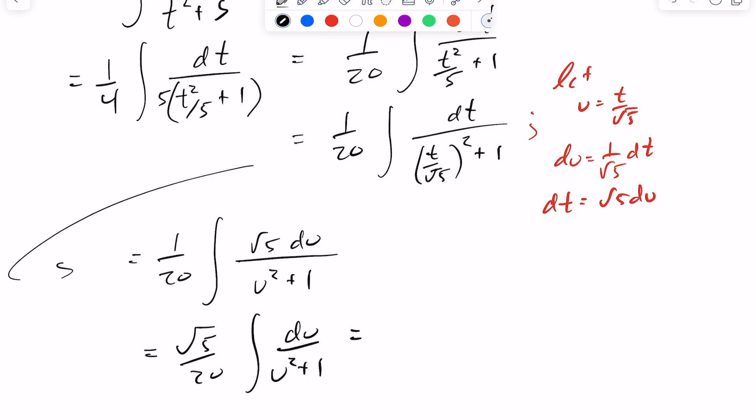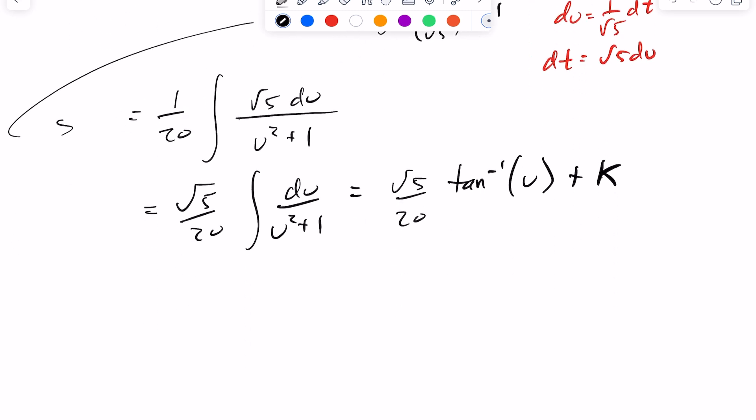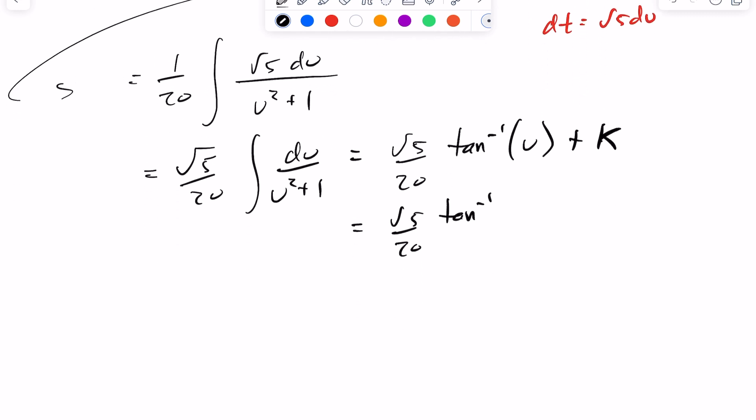And as we just discussed here, I know that this is going to equal the tan inverse of u plus some constant k. But like we said here, I had let u equal t over root 5. So this becomes t over the root of 5 plus k.